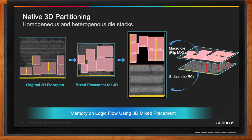With mixed placement for 3D designs, we separate out the macros, separate out the standard cells, lay them on top of each other, and unfold the floor plan to give you a faster, more efficient system with two dies — but with higher performance, lower wire length, lower power, and smaller area. It's an exploration flow for 3D stacking, and something unique that we think is going to be of tremendous value to customers trying this kind of approach.